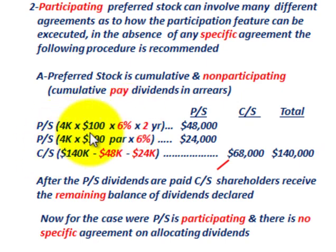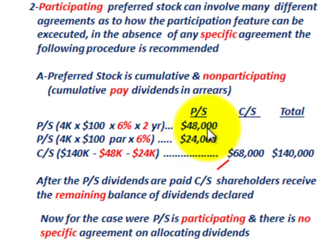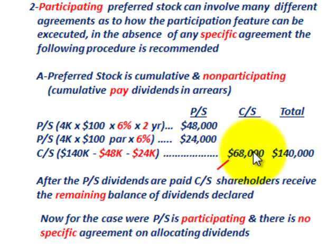Preferred stock gets paid ahead of common stock. For non-participating, the preferred stock only gets the standard stated dividend rate. With 4,000 shares, $100 par, and 6% dividend rate, two years in arrears gives us $48,000. The preferred stock also gets its current year dividend: 4,000 shares × $100 par × 6% = $24,000. Since it's non-participating, the remainder — $68,000 — goes to common stock, calculated as $140,000 minus $48,000 minus $24,000.